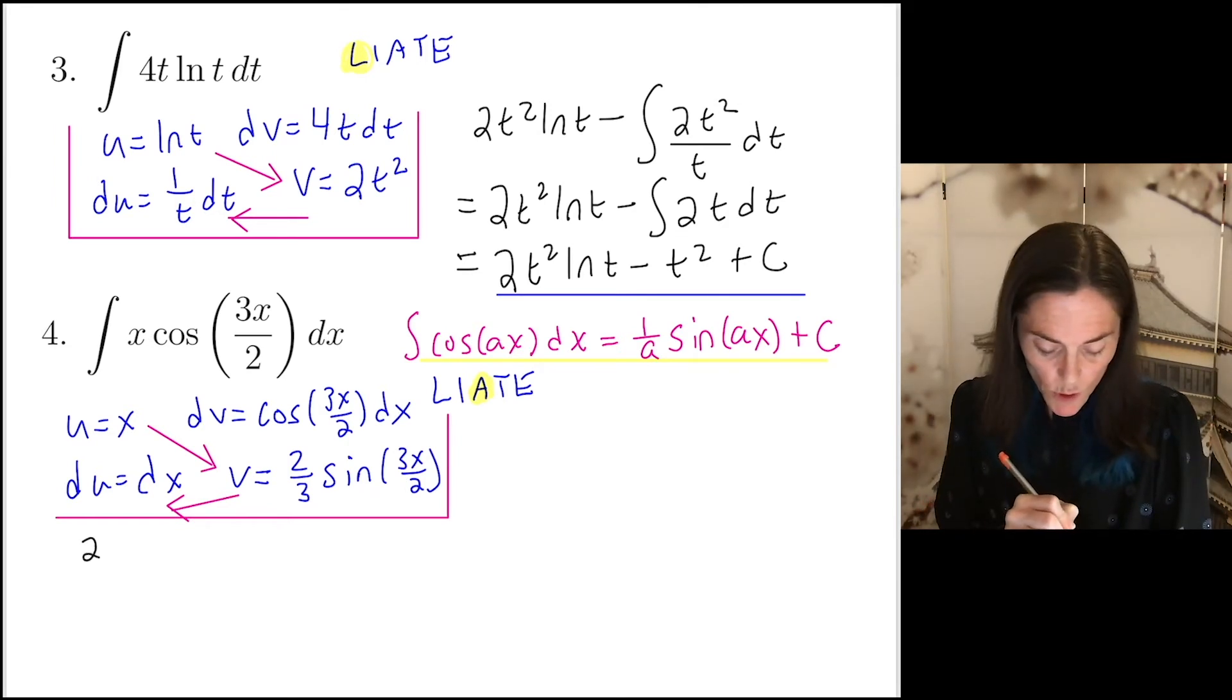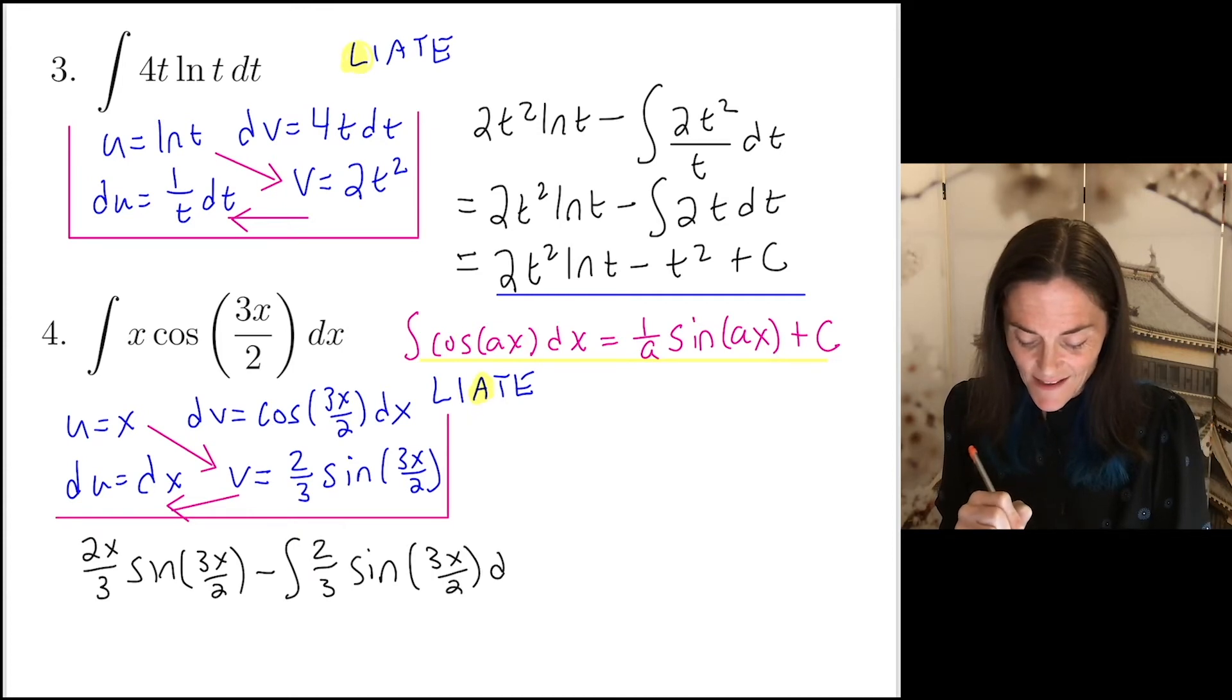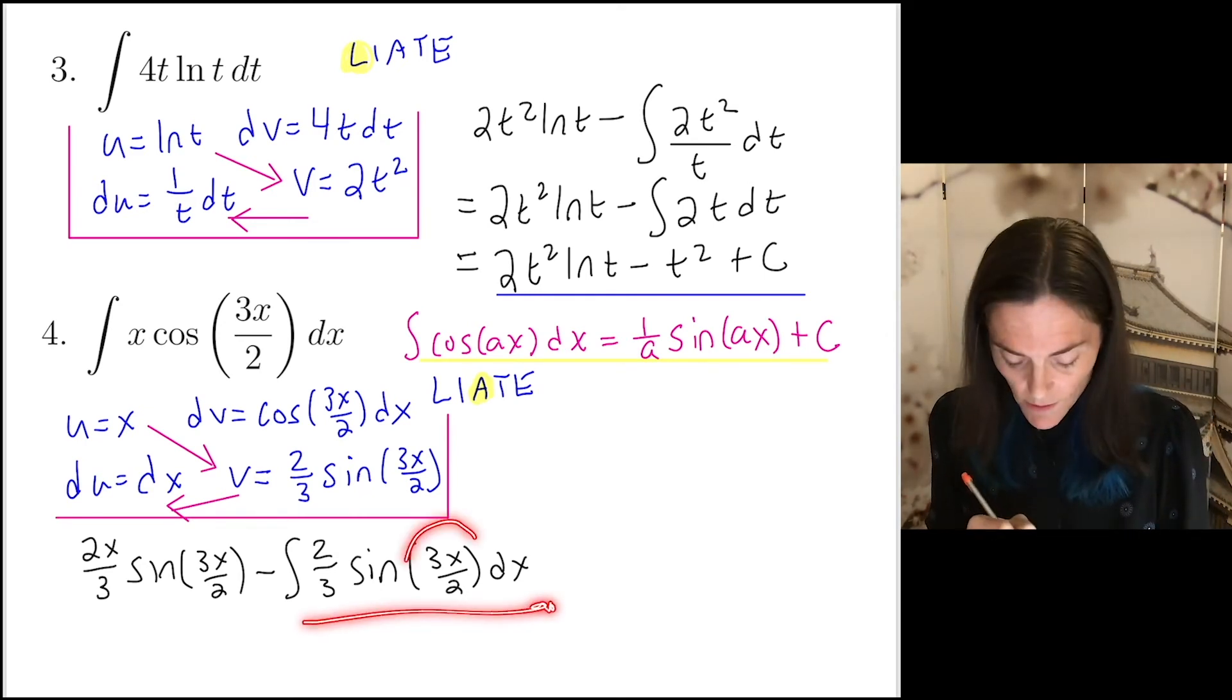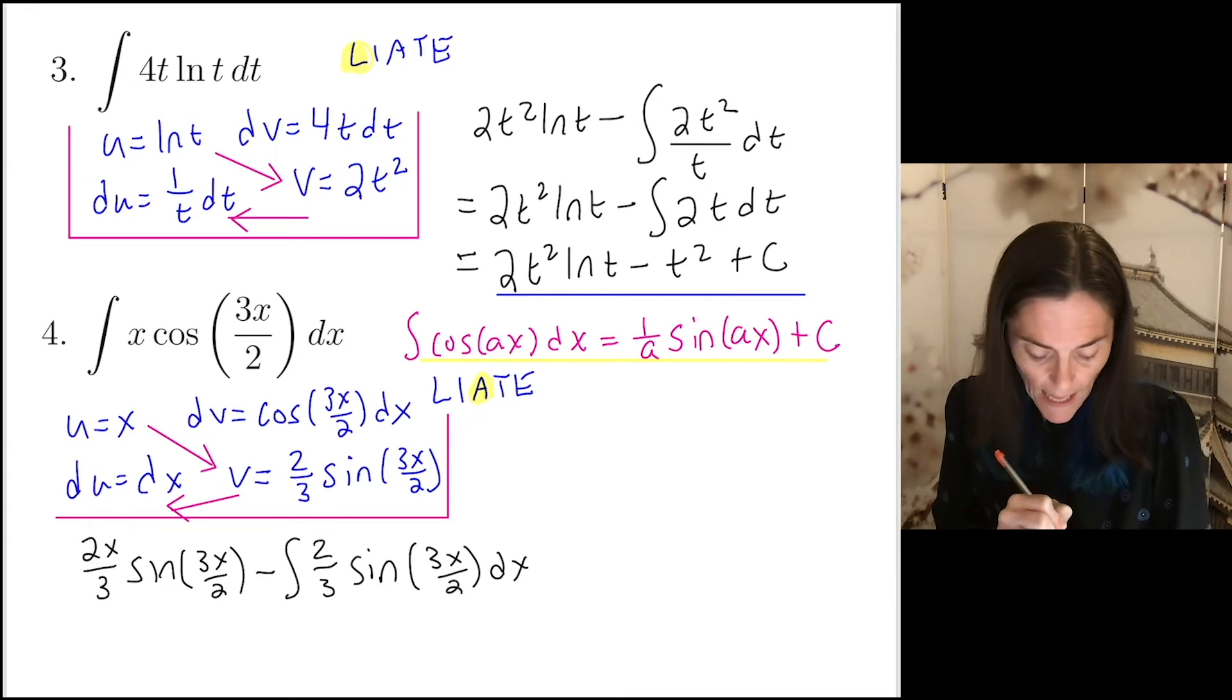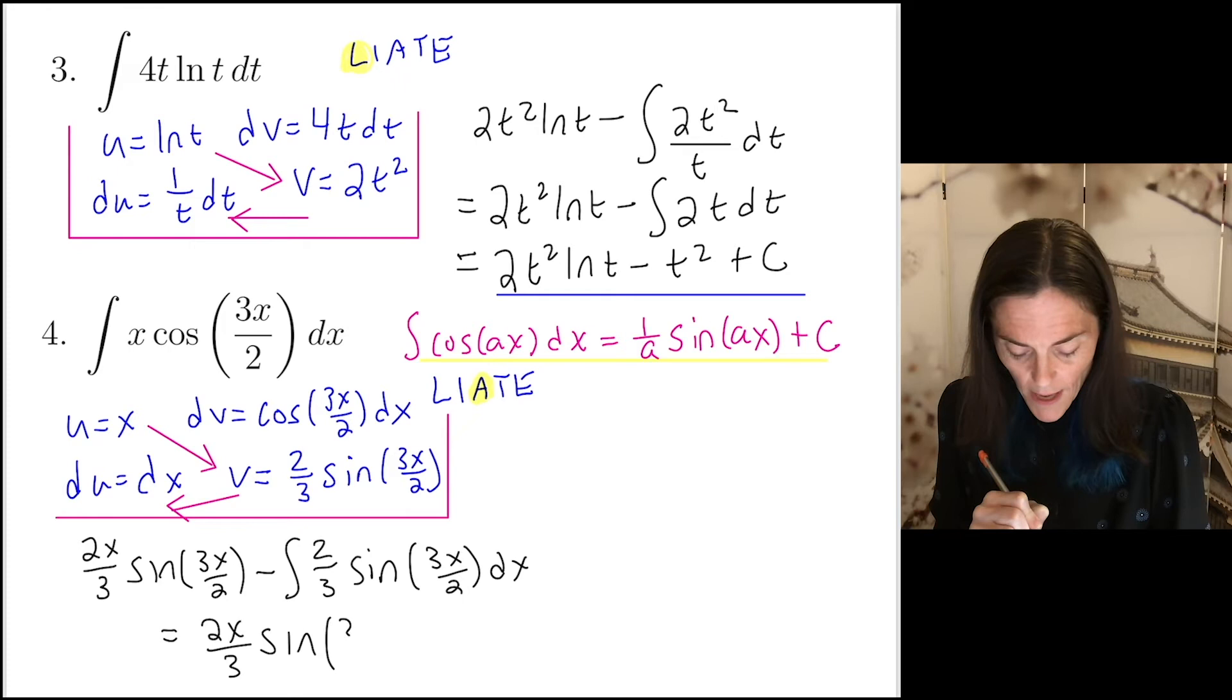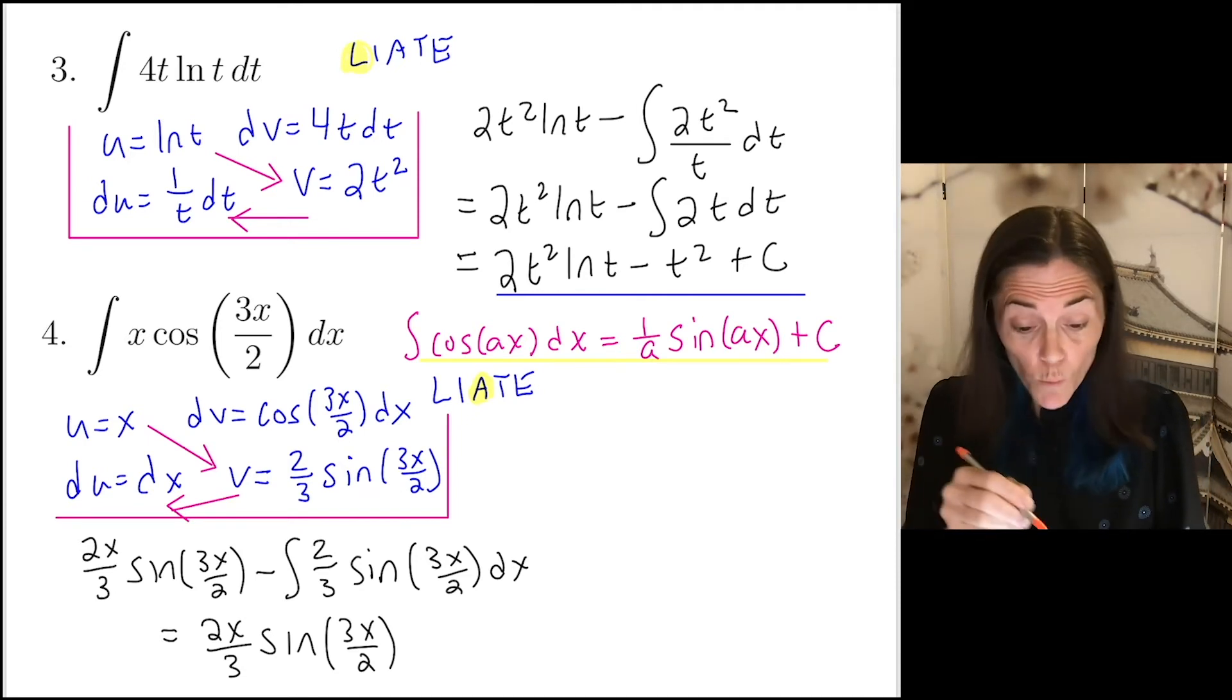These are all the pieces that I need. Then we have uv minus the integral v du. This goes 2x over 3, sine 3x over 2. And then subtract off the integral. We have 2 over 3, sine 3x over 2 dx. We have one more step, which is to integrate here. But you notice it's another a times x on the inside. In fact, a here is also 3 over 2. So when we integrate this last term, first of all, let me just copy. We have 2x over 3, sine 3x over 2.